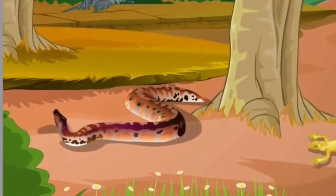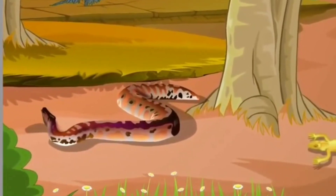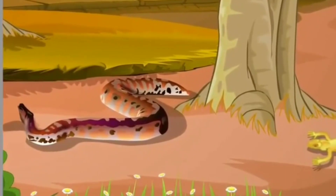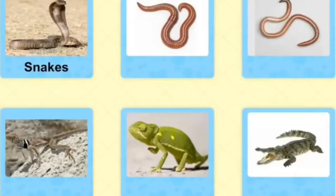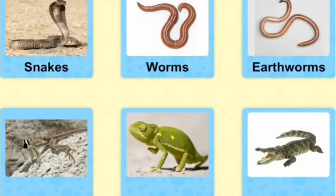Reptiles crawl on the ground. Some of them have short legs, while some have none. They are cold-blooded creatures. Snakes, worms, earthworms, lizards, chameleon, crocodile are some of the reptiles.